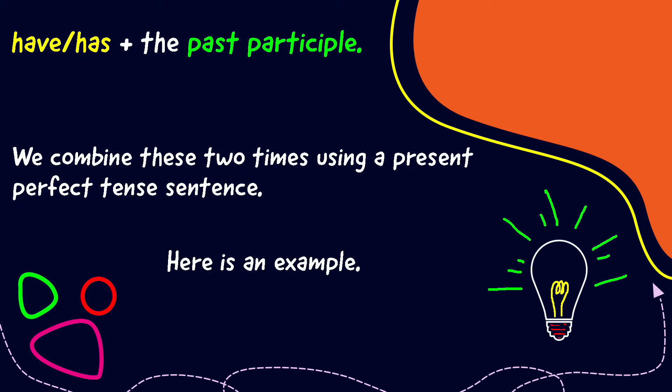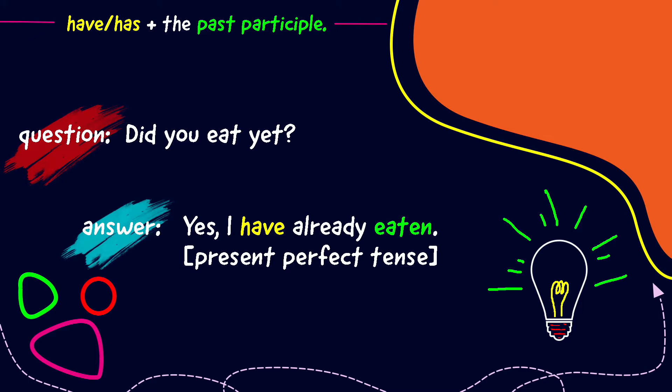We combine these two times using a present perfect tense sentence. Here is an example. Question: Did you eat yet? Answer: Yes, I have already eaten. Yes, I have already eaten is a present perfect tense sentence.